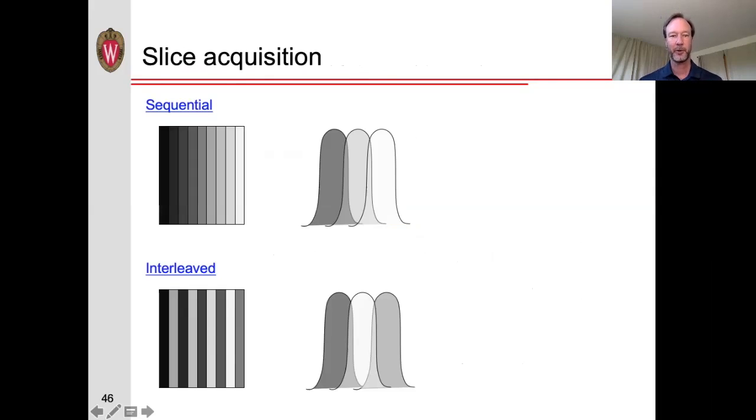And finally, a note about slice acquisition. So far, when I've been talking about acquiring two-dimensional slices in a series, the way you might imagine that we acquire it is in a sequential fashion such as here. Now, if we acquire them in the sequential fashion, one of the problems is that the slices are not perfectly, don't have a perfectly rectangular shape.